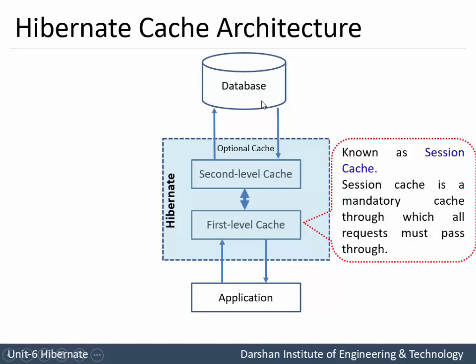The first level cache is also known as session cache. Session cache is a mandatory cache in Hibernate architecture - one needs to compulsorily implement this first level cache, through which all requests must pass. The first level cache is used for performance improvement and to reduce database hits.